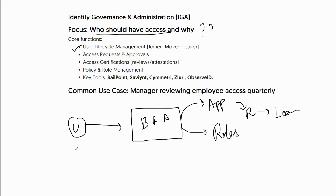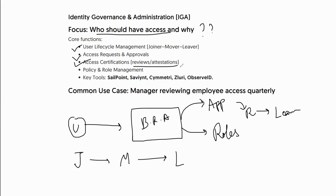User lifecycle management covers the join, move, and leave stages. Access requests and approvals define what level of access is needed and who reviews it — for example, a user requests access, the manager reviews first, then the application owner approves. Access certification ensures that access already granted is reviewed, attested, and confirmed valid for a certain period of time.